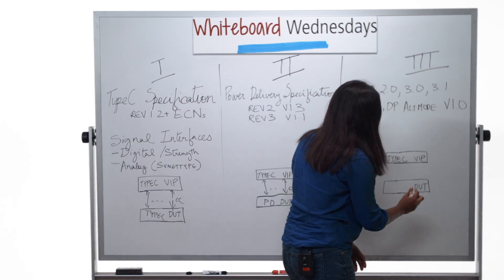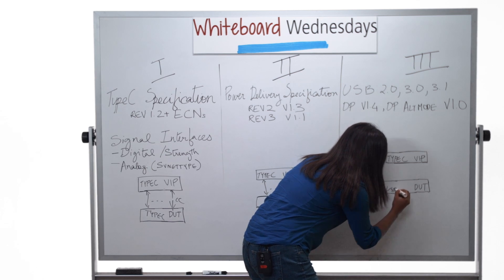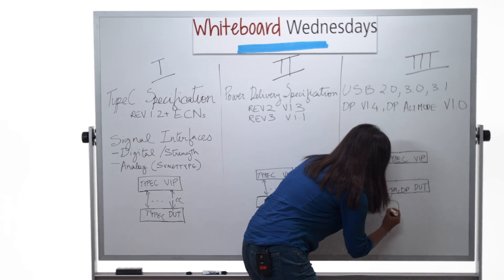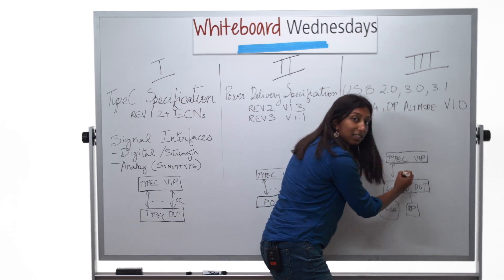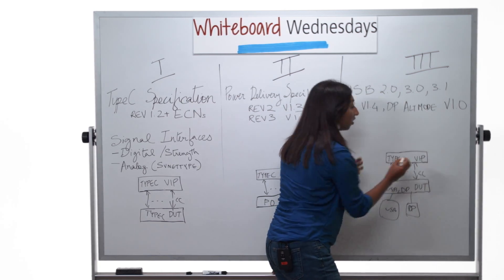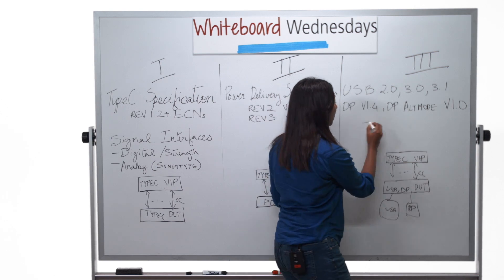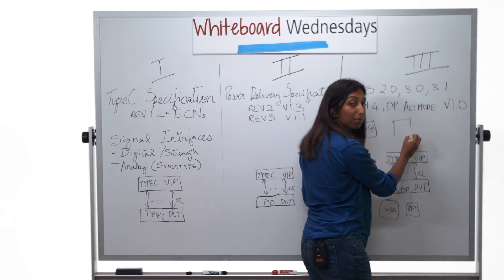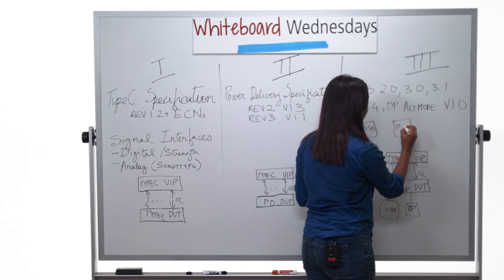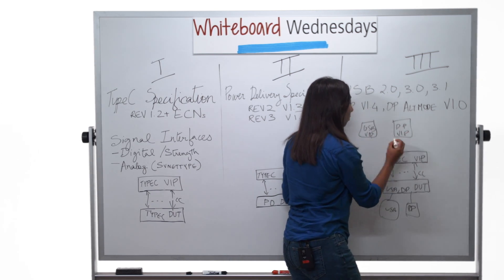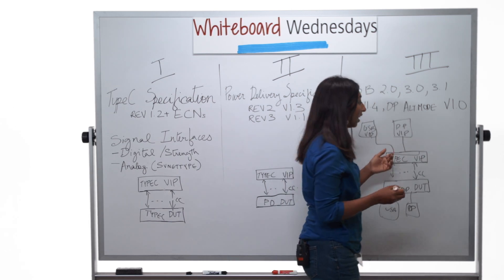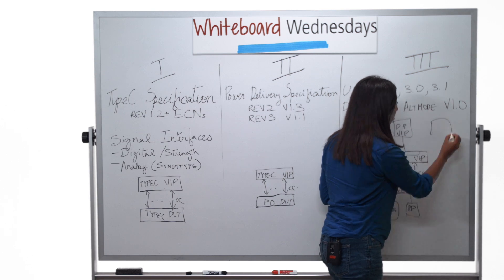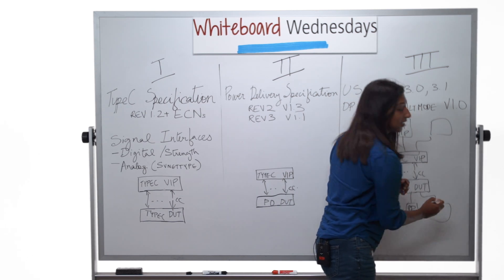You can use the Type-C VIP with DUTs that include USB and DisplayPort, with the Type-C interface. On the VIP side, you would use Cadence's USB VIP and DisplayPort VIP with special routing logic built into the Type-C VIP. In future, we hope to see more protocols being added to these designs.